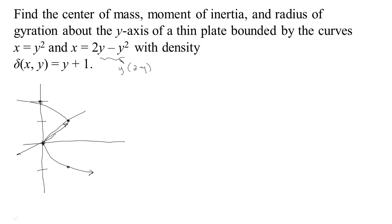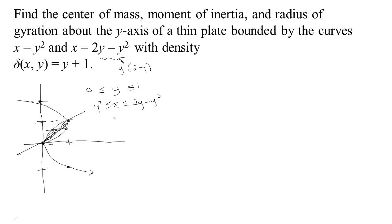We want the region between those two parabolas. We can set up the integral either way, but since x was given as a function of y, it makes sense to put y between two horizontal lines. So the bounds are y between 0 and 1. For each value of y in that range, x starts at the y-squared parabola and continues until it hits the 2y minus y-squared parabola. So those are our bounds.